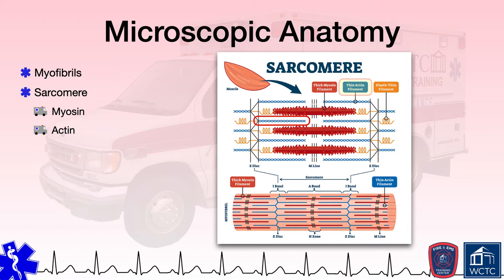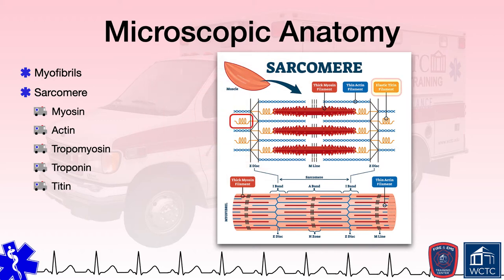The next myofilament is actin, a thin contractile protein filament that contains binding sites. Groups of actin molecules twist into helixes to form actin filaments. When at rest, the binding sites on actin molecules are covered by tropomyosin molecules, which are held in place by troponin molecules and are responsible for regulating muscle contraction. The sarcomere in skeletal and cardiac muscle also has a non-contractile protein called titin that is responsible for aligning the thick myosin filaments in the sarcomere. Dystrophin, another non-contractile protein, holds the thin actin filaments to the muscle cell's membrane while also contributing to muscle fiber strength.